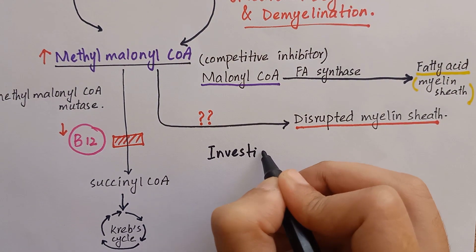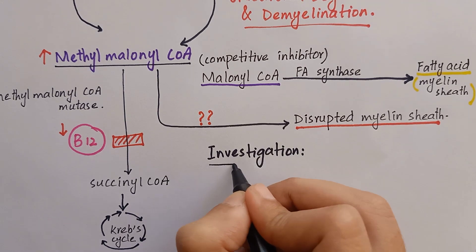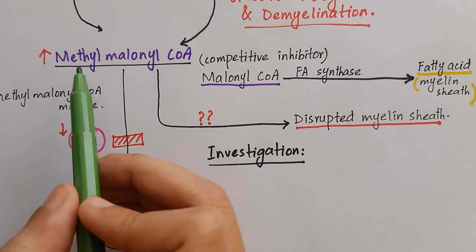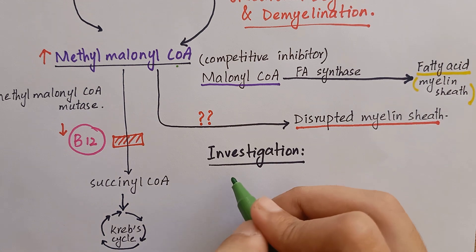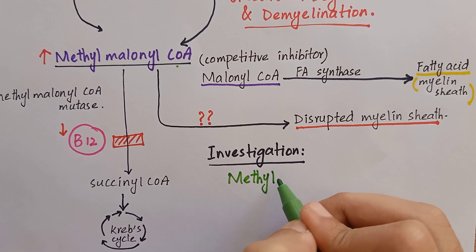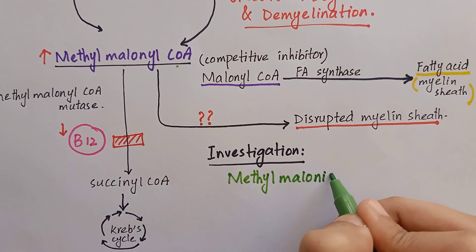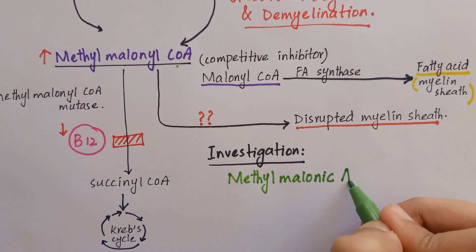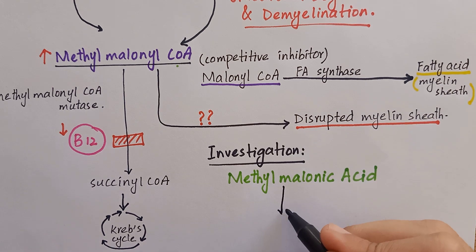There is an important clinical investigation for estimation of B12 levels in serum. When methylmalonyl-CoA accumulates due to B12 deficiency, it gets converted into methylmalonic acid. Methylmalonic acid is excreted in urine and can be detected in the laboratory.